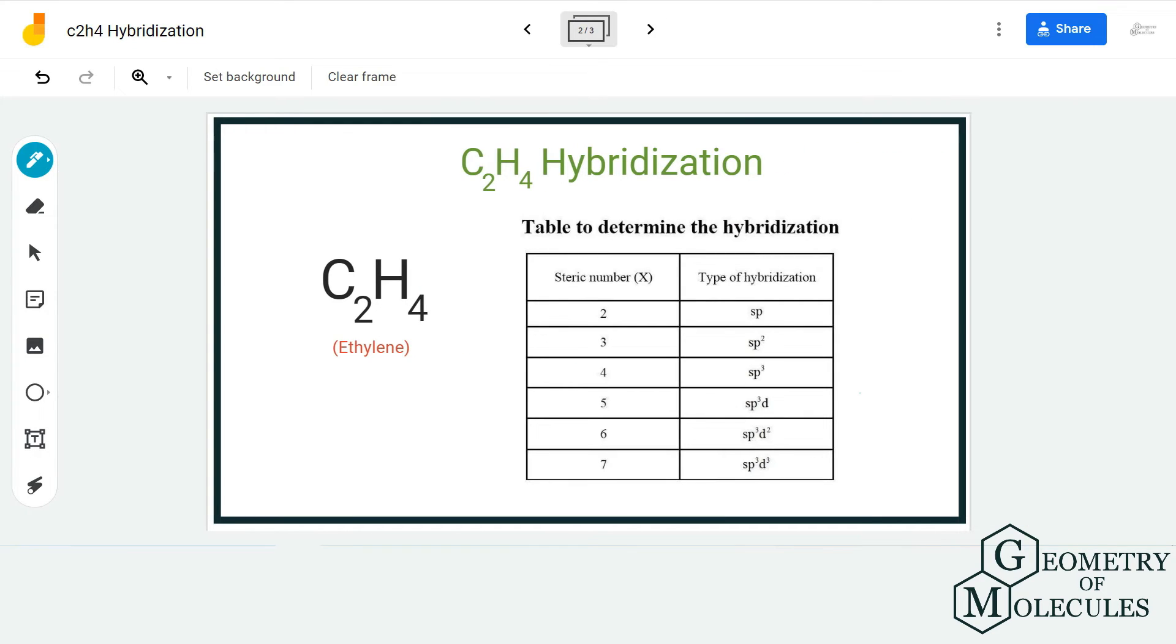You can refer to this table which can help you determine the hybridization in under two minutes. The steric number of three corresponds to sp2 hybridization, so both these carbon atoms will have sp2 hybridization.